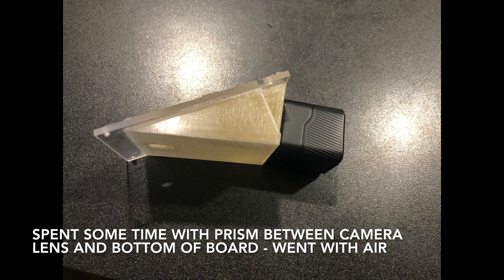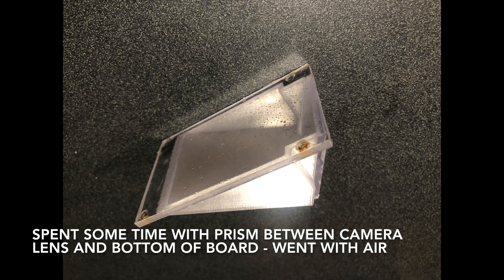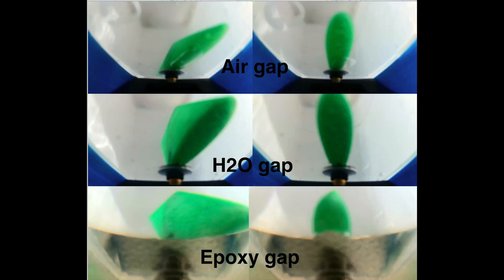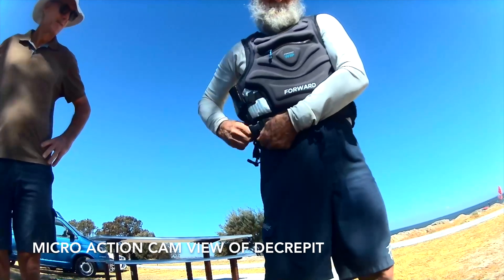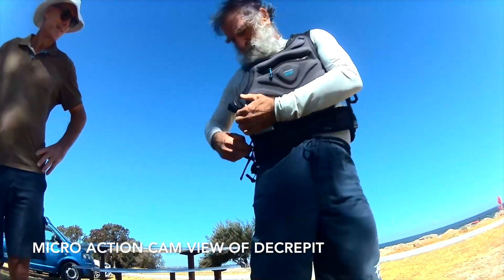The first run with the underwater action camera was with the normal fin to see how the air gap prism worked and how the same fin without the canard performed. I tried various prisms between the camera lens and the board bottom. Epoxy filled prism gave weird optical reflections and the least view. A water filled prism gives the least angle of refraction issues but is harder to make so I went with an air filled prism for this effort.